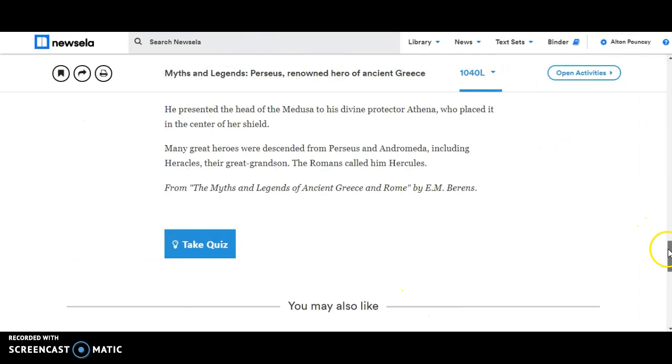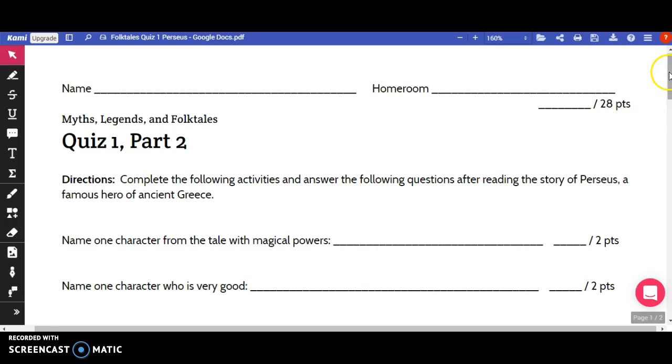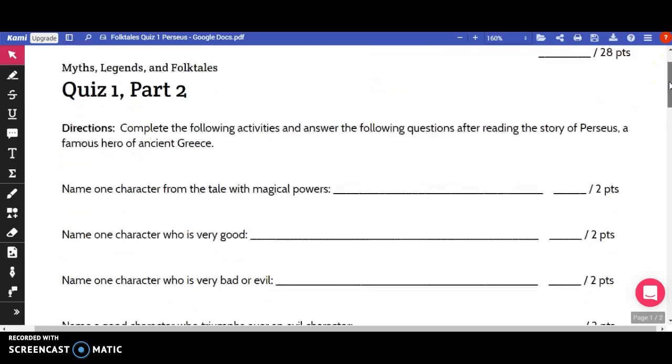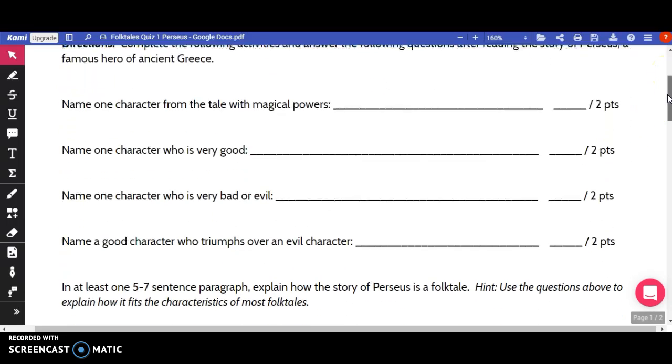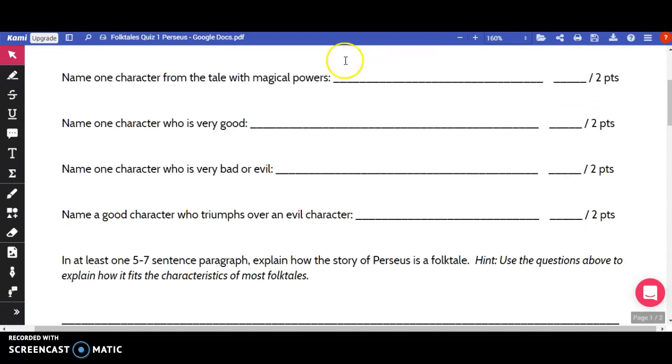Once you've read this story, you are going to answer four short questions and write two paragraphs. The four short questions are: Name one character from the tale with magical powers. Name one character who is very good. Name one character who is very bad or evil. And name a good character who triumphs over an evil character.